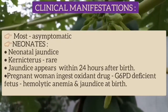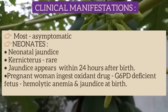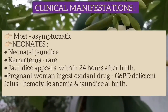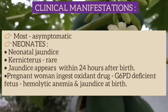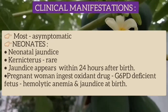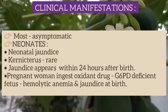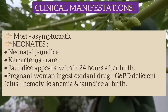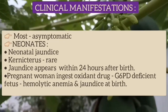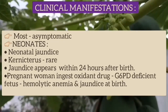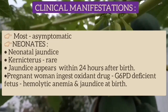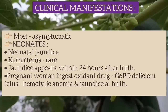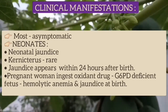Most patients are asymptomatic. Symptomatic patients present with neonatal jaundice; kernicterus is a rare but fatal complication. Jaundice in neonates usually appears within 24 hours after birth, sometimes at the same time as or slightly earlier than physiological jaundice, but later than in blood group immunization. When a pregnant woman ingests oxidant drugs, they may be transmitted to her G6PD-deficient fetus, and hemolytic anemia and jaundice may be apparent at birth.